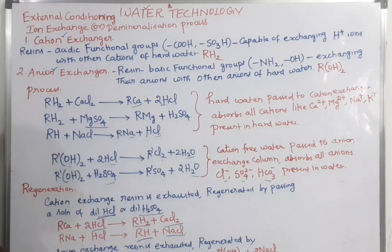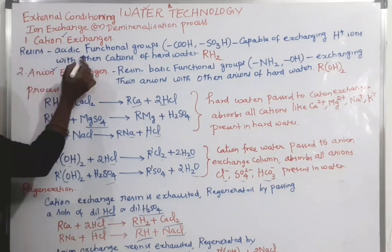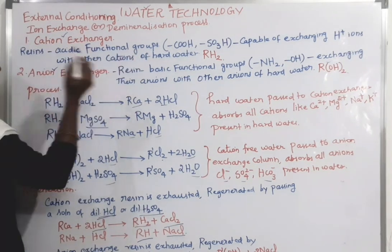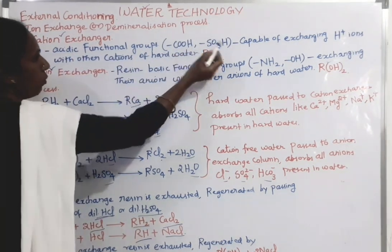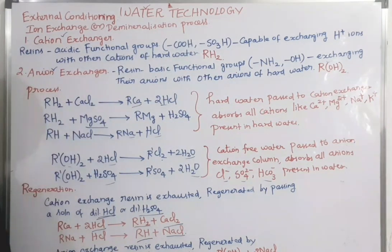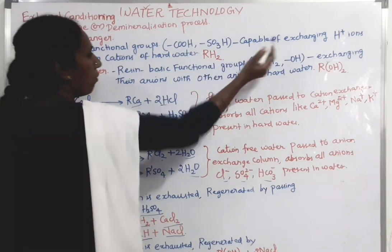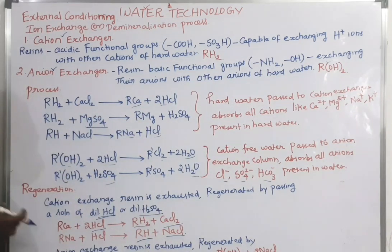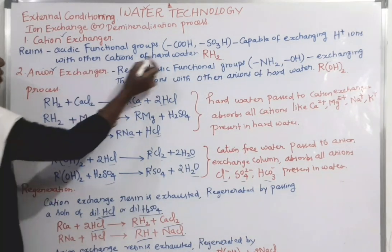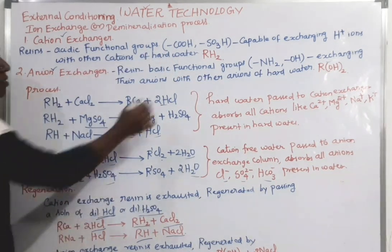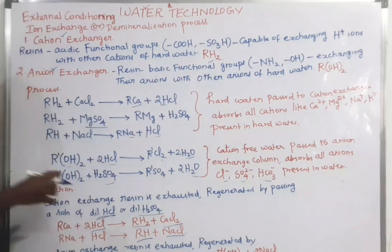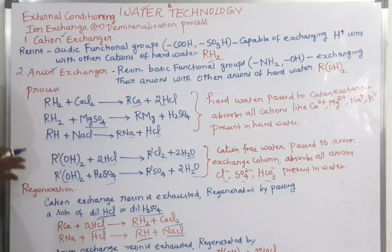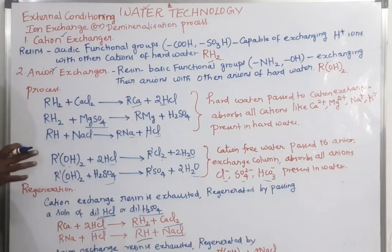Let us know about the cation exchanger. The resins which have acidic functional groups — that is, carboxylic acid (–COOH) and SO3H — are present in the cation exchanger, which is capable of exchanging the H+ ions with other cations. It is represented as RH2, meaning the H+ ions are exchanged with other cations present in the hard water.